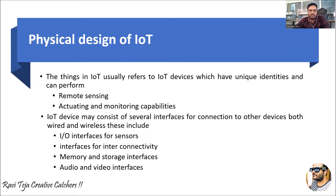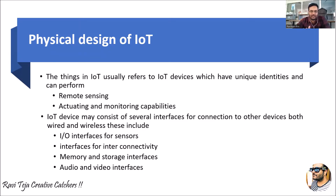Generally, IoT refers to several IoT devices or several things which are connected over an internet. Each and every IoT device or thing will have its unique identity, which can perform remote sensing, actuating, and monitoring capabilities.